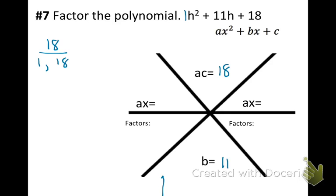So 1 and 18 will give us 19, 2 and 9. Those are the factors that if we combine them, we get 11.